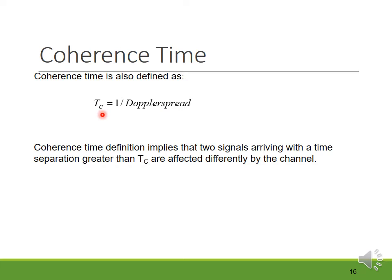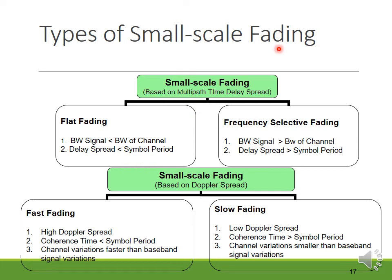Next are the different types of small-scale fading. Based on multipath time delay spread, they are classified as flat fading and frequency selective fading. Based on Doppler spread, they are classified as fast fading and slow fading. We will discuss each type in detail.